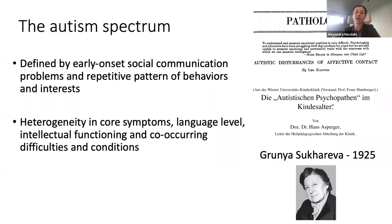It's worth highlighting that a woman named Grunia Sukareva published a paper describing autism in 1925, two decades before Kanner and Asperger, but seems to have been forgotten. The core defining features of autism remain early childhood onset impairments in communication and social interaction, alongside restricted and repetitive behaviors and interests. There is wide variability in core symptoms, language level, intellectual functioning, and co-occurring difficulties and conditions.